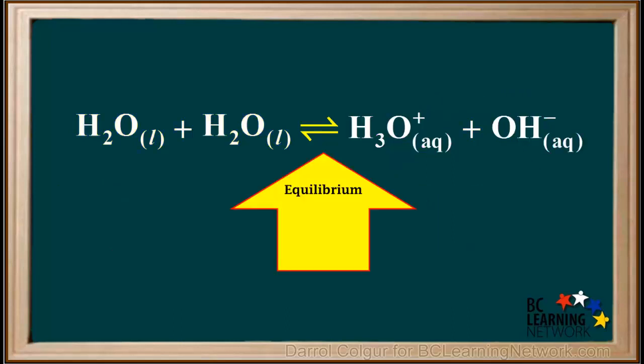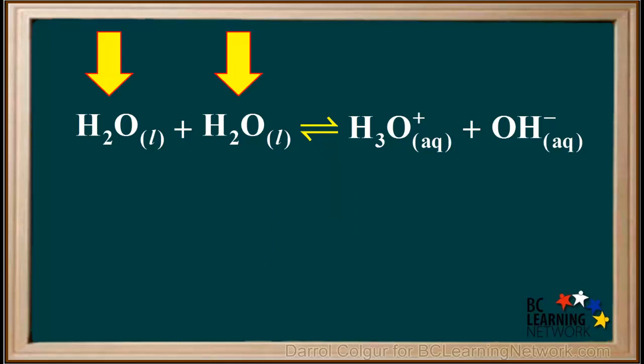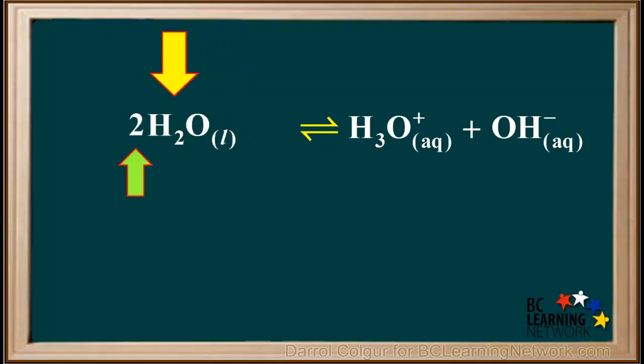Because both the forward and reverse reactions continuously occur, this is an equilibrium, so we use a double arrow here. Instead of writing these as two separate water molecules, we can combine them to show them simply as two water molecules.